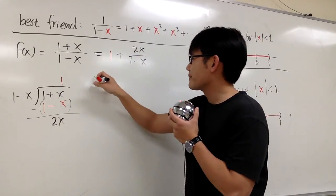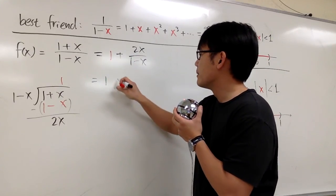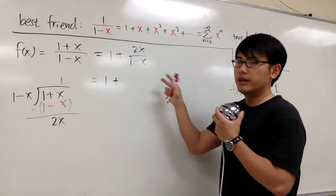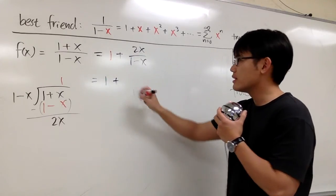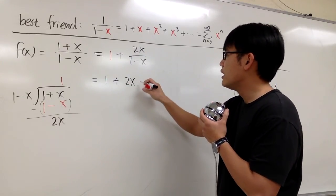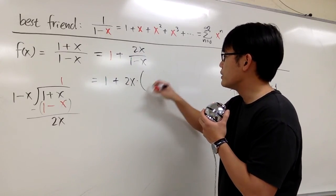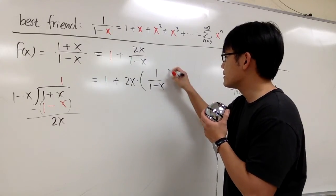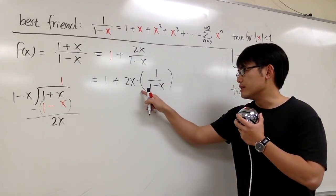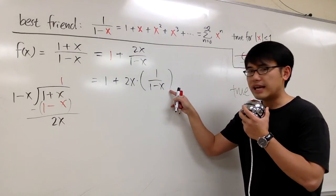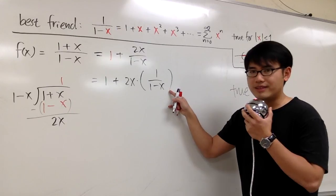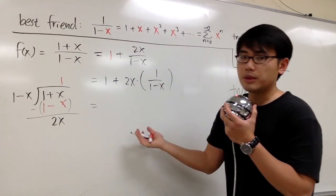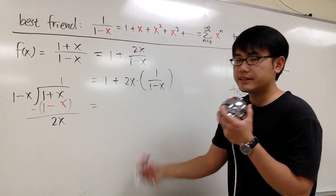This is 1 plus — I will just put the 2x in the front. So we have the 2x right here, and then multiply with 1 over 1 minus x. As you can see, this is exactly our good friend over there, and I will just work with the sigma notation in this case.